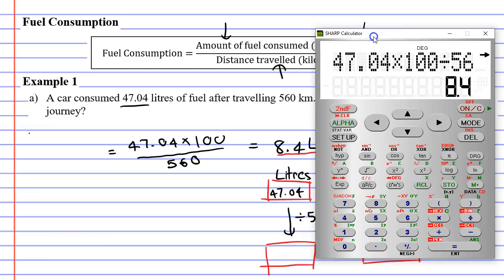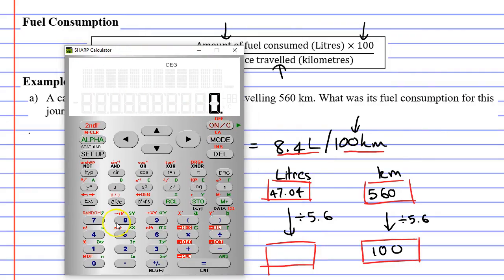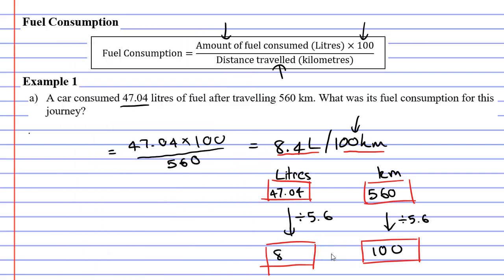Let's try that out now. 47.04 divide 5.6 equals 8.4 litres, which is what we wanted. And then from this, we can see that we use 8.4 litres per 100 kilometres.